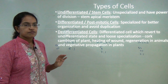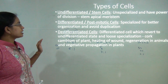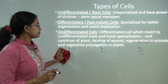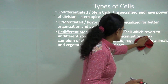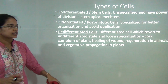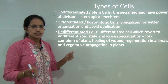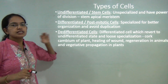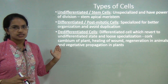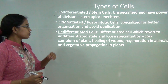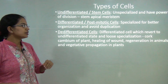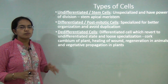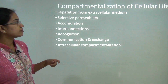There are three basic types of cells. First, undifferentiated or stem cells — unspecialized and having the power of division, such as apical cells at the meristem. Second, differentiated or post-mitotic cells — specialized for better organization of cell structure and avoiding duplication. Third, de-differentiated cells — cells that revert back to an undifferentiated state and lose their specialization, such as the cork cambium of a plant, healing of a wound, or regeneration in animals.